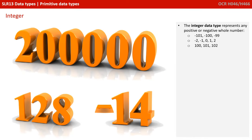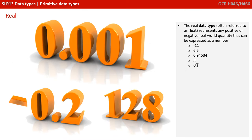The integer data type represents any positive or negative whole number, and some examples are shown here. The real data type, often referred to as a float, represents any positive or negative real world quantity that can be expressed as a number. Importantly, we can now include numbers with fractional or decimal components.